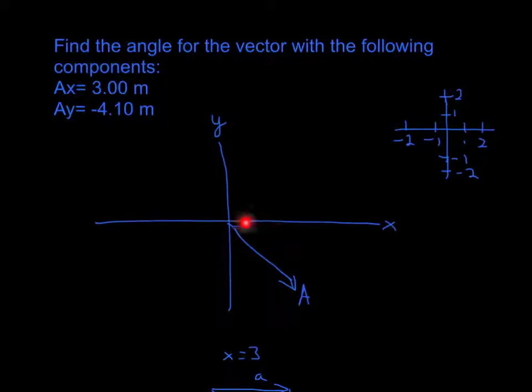So the X component goes right here and the Y component is negative. So the Y axis is positive here and negative here. So if the Y component is negative and the X component is positive, that means the vector has to be in this quadrant. So I drew the vector there.